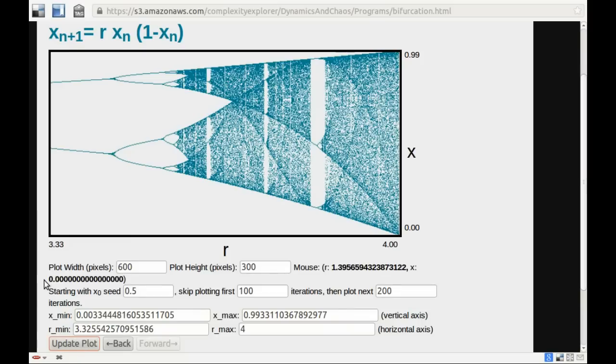We focused in the last video on these period doubling transitions from period 2 to 4, 4 to 8, and so on. But there's some other interesting structure as well.